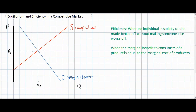Let's look at the market over here on the left and consider this the market for movie tickets. The marginal benefit, or demand, for movie tickets is downward sloping — the more movie tickets are consumed, the less the additional happiness enjoyed by consumers. The supply of movie tickets is upward sloping, equal to the increasing marginal cost to producers, as society's resources become more scarce and the additional cost of providing movie tickets increases.